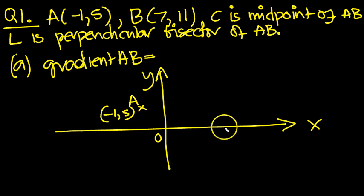B is the point 7, and up 11, so that should be there. And that's the point B. And let's draw the line AB. We need to get the gradient.